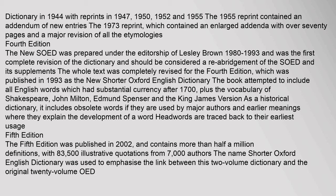The fifth edition was published in 2002 and contains more than half a million definitions, with 83,500 illustrative quotations from 7,000 authors. The name Shorter Oxford English Dictionary was used to emphasize the link between this two-volume dictionary and the original 20-volume OED.